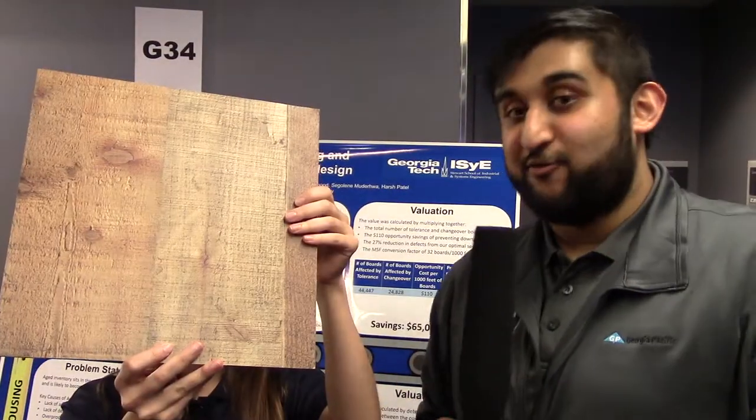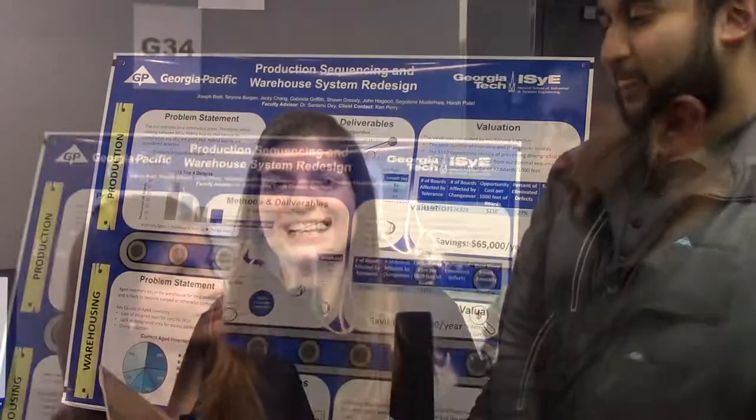This semester our client was Georgia Pacific. Most people recognize them for their paper products, but we actually worked with them on the production of their decorative wooden panels. There are two stages to our project: the production side, which involves manufacturing these boards, and the warehouse aspect, which covers storing, packaging, and getting them ready to sell.